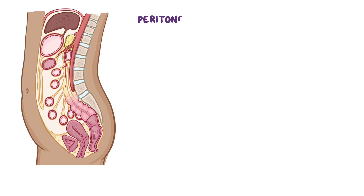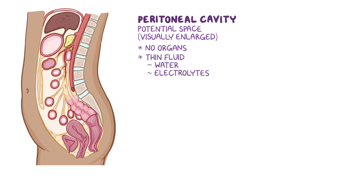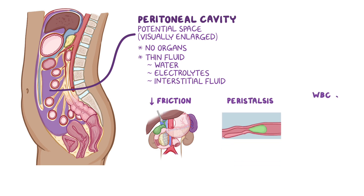The peritoneal cavity is a potential space between the parietal and visceral layers of the peritoneum. Keep in mind that the peritoneal cavity has no abdominal organs. It only contains a thin film of fluid that contains water, electrolytes, and other substances derived from the interstitial fluid. The peritoneal fluid helps viscera move without friction, allowing for peristalsis, and it also has white blood cells and antibodies to resist infection.